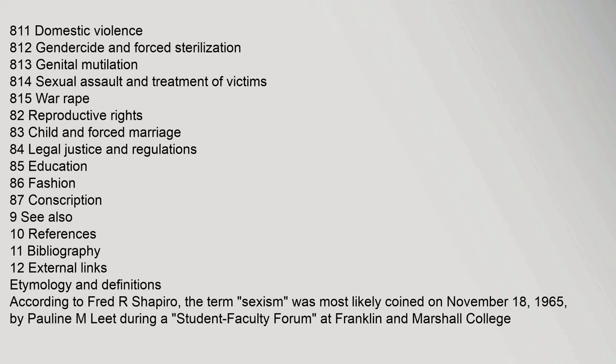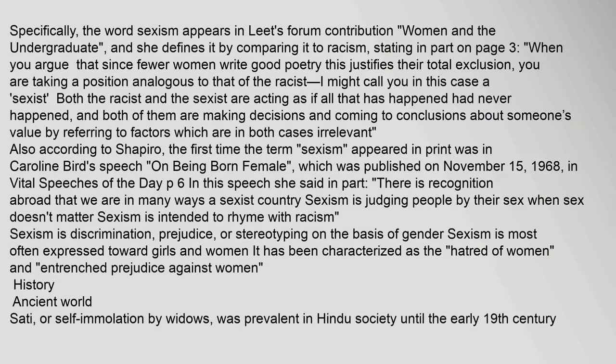Etymology and Definitions: According to Fred R. Shapiro, the term 'sexism' was most likely coined on November 18, 1965, by Pauline M. Leet during a Student Faculty Forum at Franklin and Marshall College. The word sexism appears in Leet's forum contribution 'Women and the Undergraduate,' where she defines it by comparing it to racism, stating: 'When you argue that since fewer women write good poetry this justifies their total exclusion, you are taking a position analogous to that of the racist — I might call you in this case a sexist. Both the racist and the sexist are acting as if all that has happened had never happened, and both are making decisions about someone's value by referring to factors which are in both cases irrelevant.'